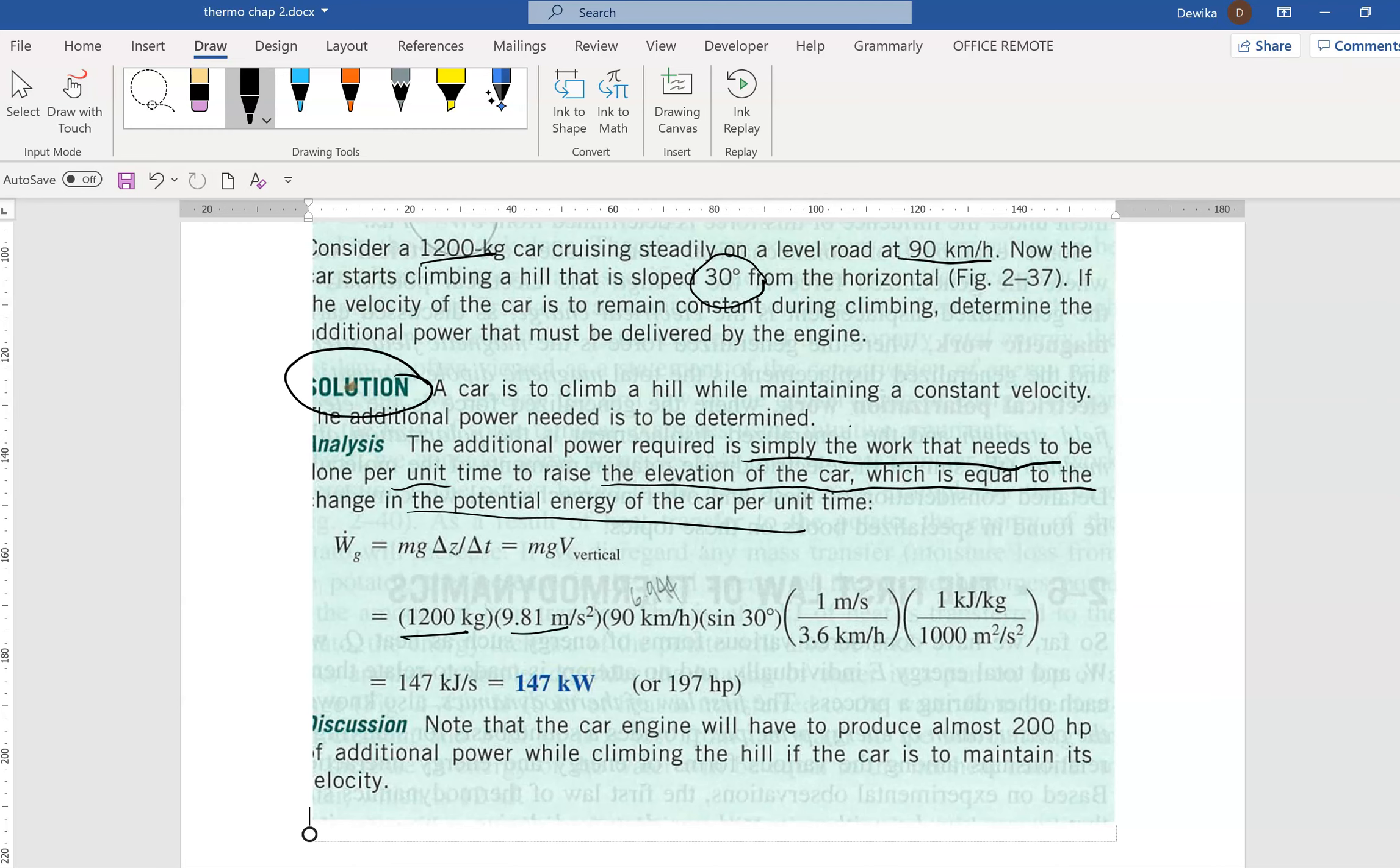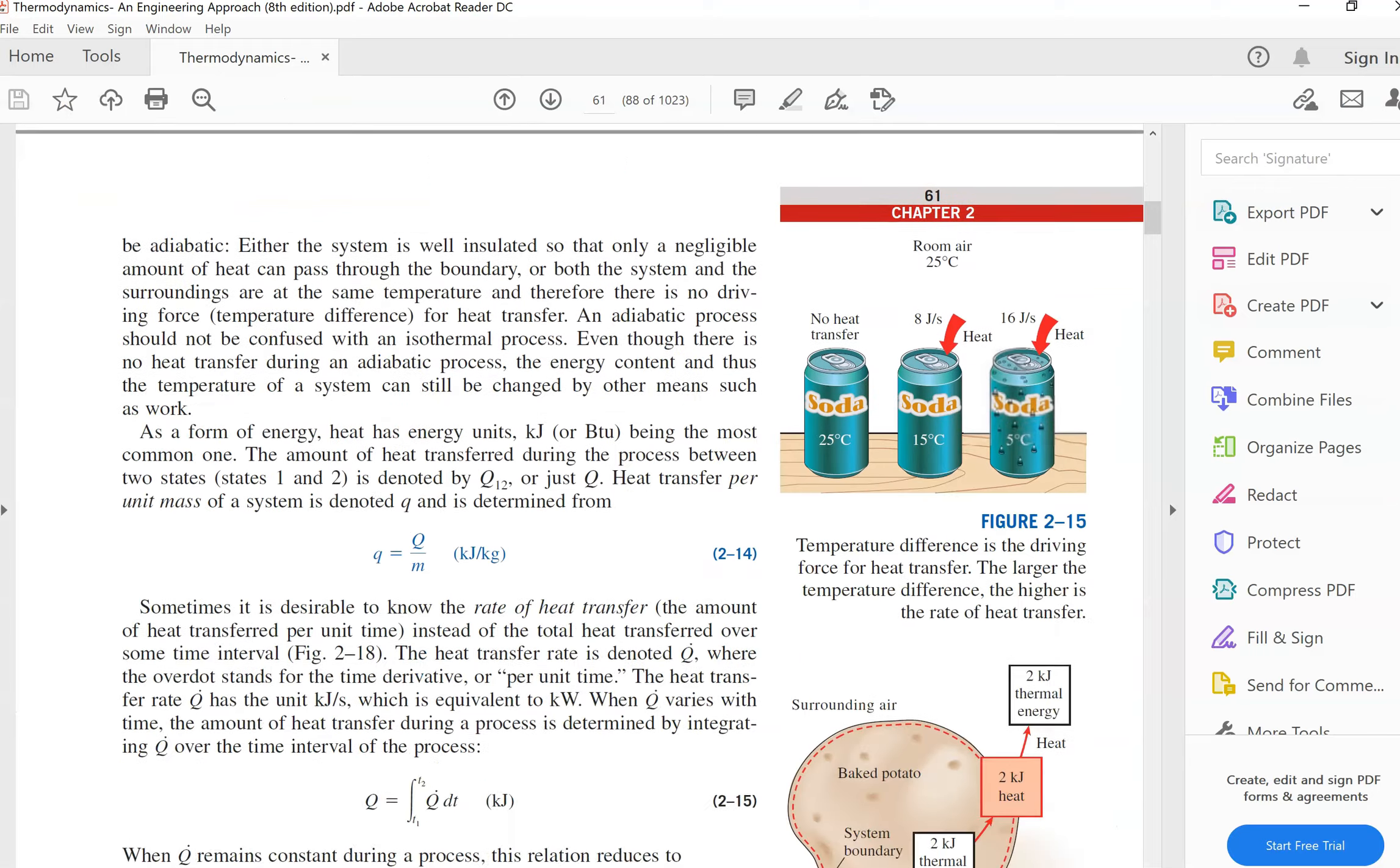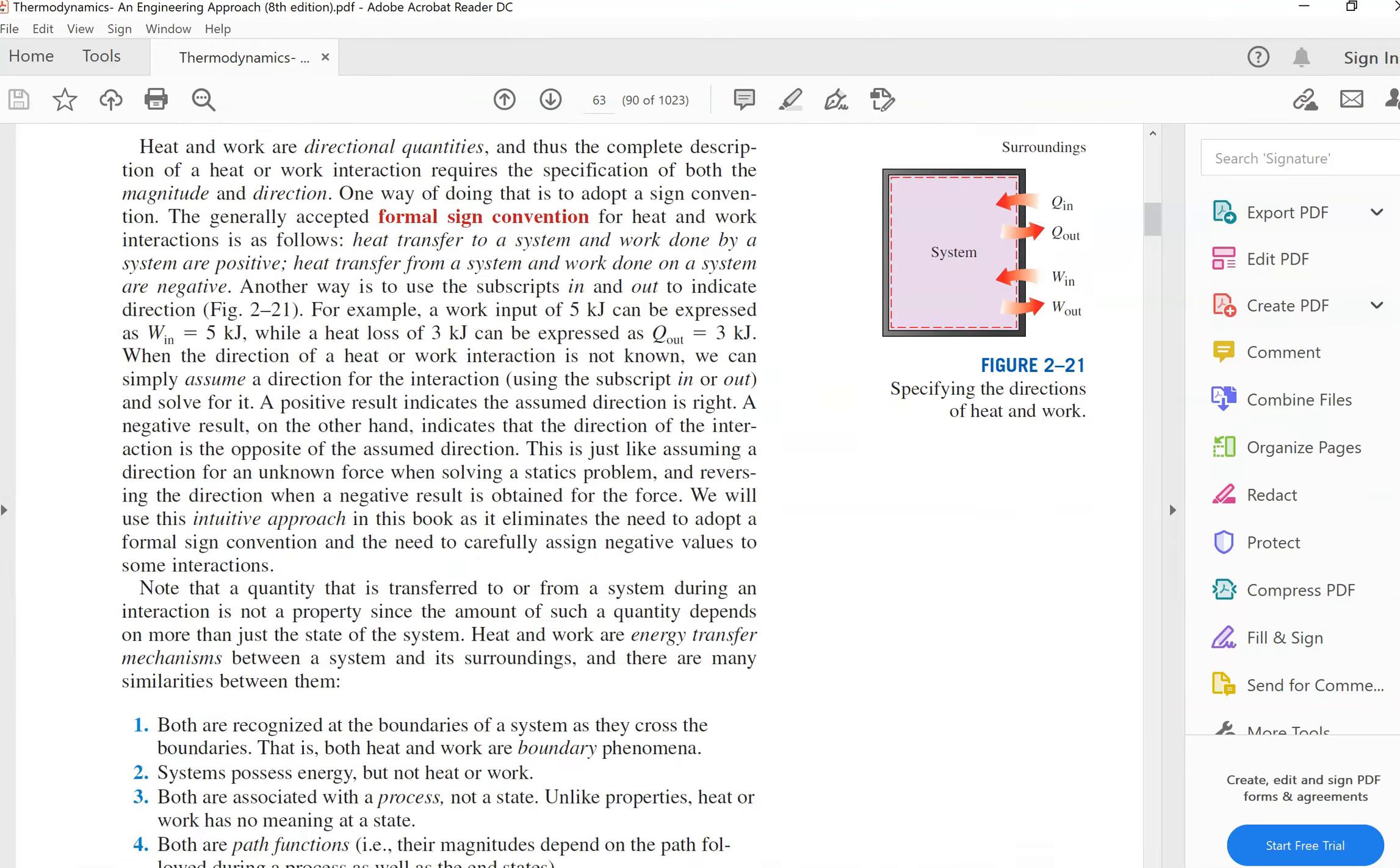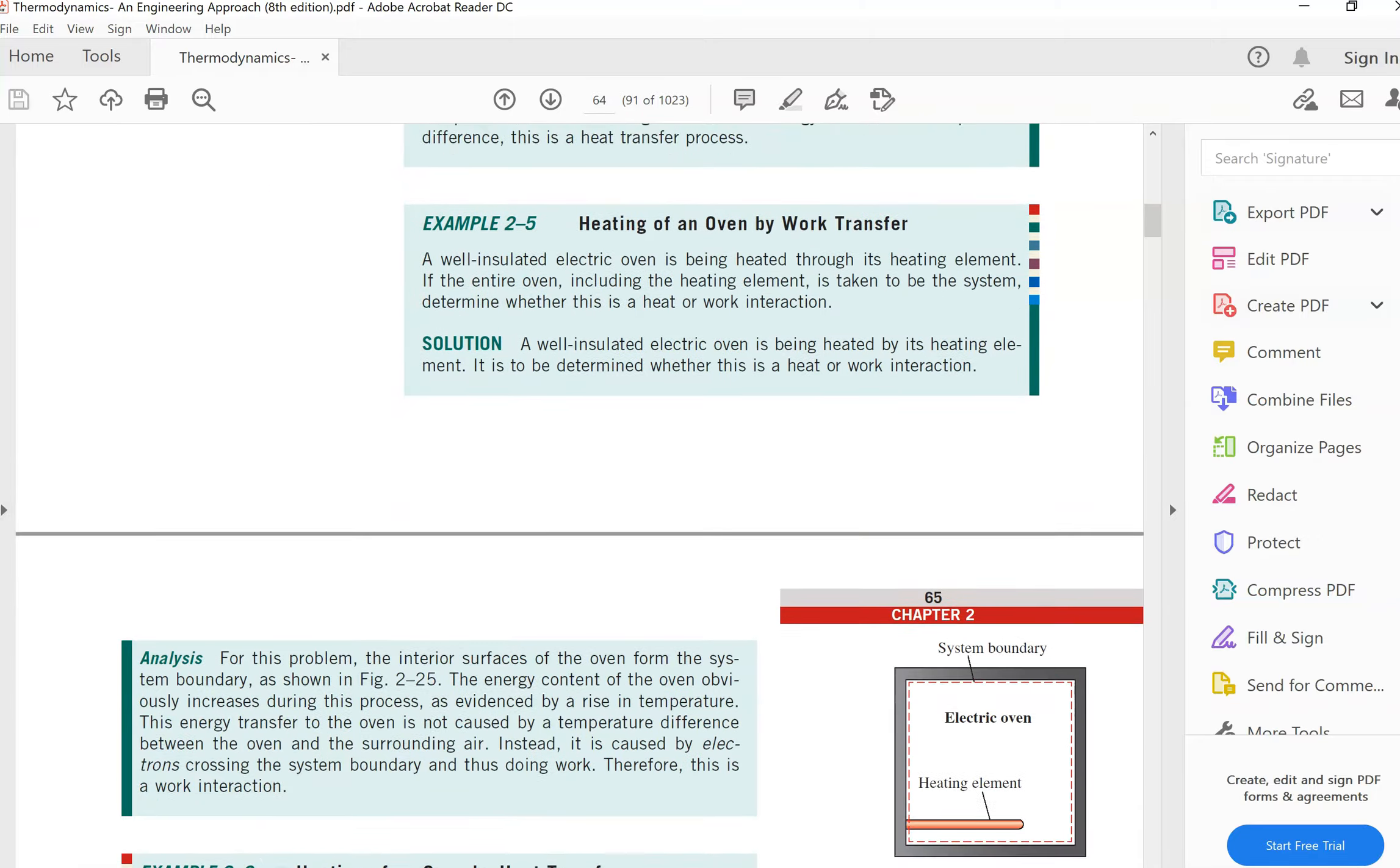We have the mass of the car m, we have g and h. This is where we need to convert. We have the speed which is 90 km/h and sine 30. Maybe we should refer to the diagram of the question so it's easier.